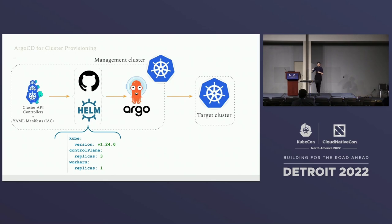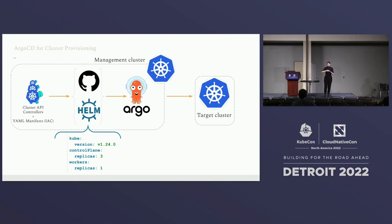Once I introduce a Helm chart, ArgoCD is going to watch it for any changes. Once changes are committed to the GitHub repository, ArgoCD picks them up and applies them to the management cluster, where the provider picks up all the changes and applies them to our target clusters.